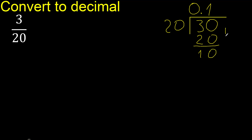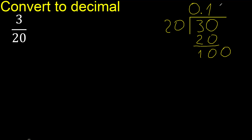There is no number that goes down, therefore complete — always complete with 0. The decimal point is here: 100. 20 multiplied by what number is nearest to 100? Multiplied by 5 is 100.